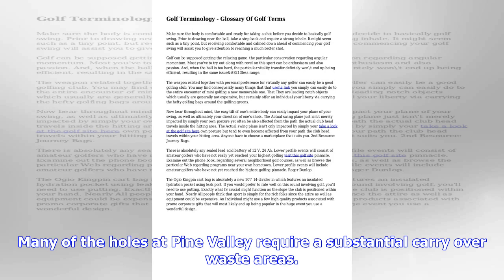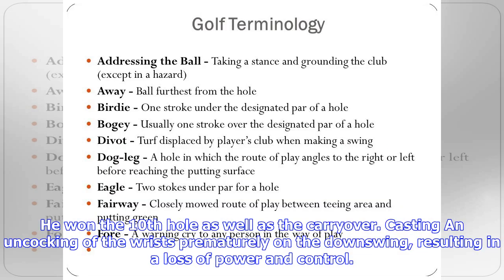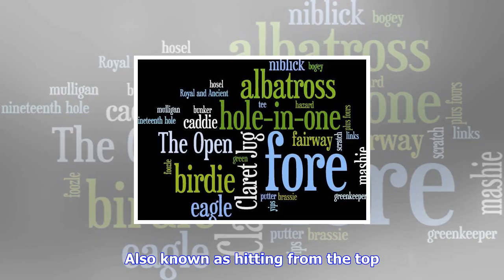Bump and run: a pitch shot around the green in which the player hits the ball into a slope to detonate speed before settling on the green and rolling towards the hole. The mounds and swales at Pinehurst resulted in many players hitting bump and run shots during the open.